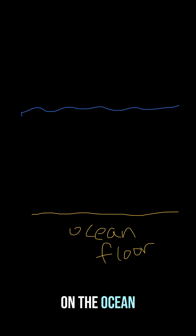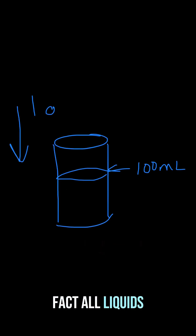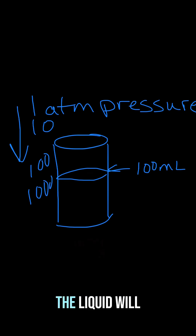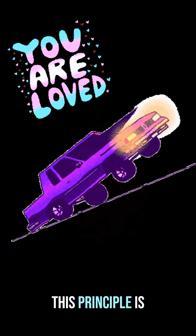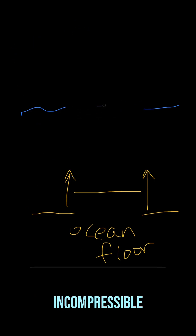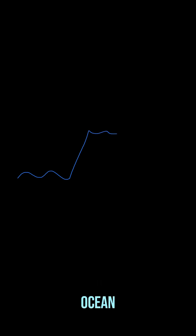A tsunami forms when an earthquake on the ocean floor causes the floor of the ocean to lurch upwards. Water, and in fact all liquids, are incompressible, which means that no matter how much pressure you put it under, the volume of the water or the liquid will not change. This principle is how hydraulics work. Because water is incompressible, the entire water column above that portion of the ocean floor also rises, forming a lump in the surface of the ocean.